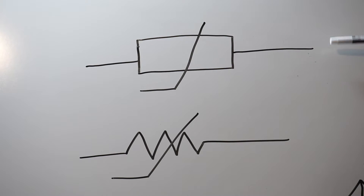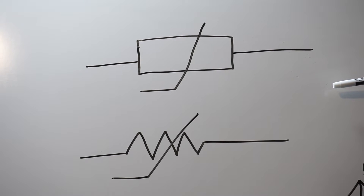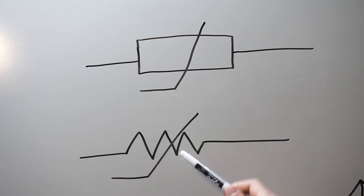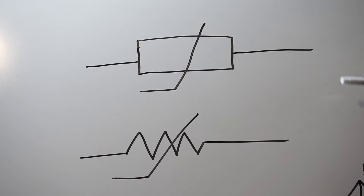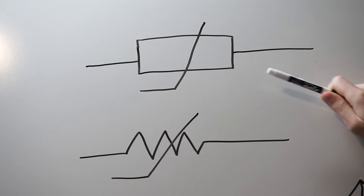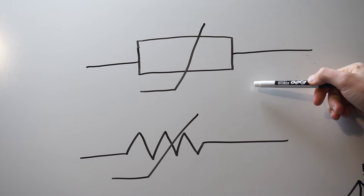To start, I want to show you guys the schematic symbol for a thermistor. It's very similar to the resistor — it really is just a resistor with a little kind of line drawn through it. I'm not sure where that actual symbol came from, so if someone knows, leave it in a comment down below. It looks very similar to a resistor because they really do behave just like a resistor.